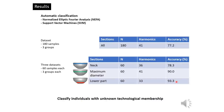Automatic classification of these parts can thus be considered successful. This classification model can then be tuned up and used to classify individuals with unknown technological membership.